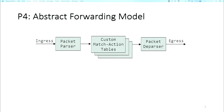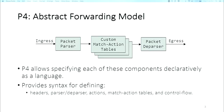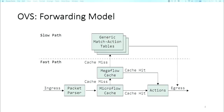I'll briefly talk about the P4 abstract forwarding model. In terms of OpenVSwitch or software switches, we don't have the queuing part in the middle — just a packet parser, a collection of match-action tables, and then a packet deparser. OpenVSwitch has a more complicated architecture with a fast path and a slow path. The fast path is where packet parsing happens, and instead of doing match-action pipelines, there is a set of caches. A cache gives you a single lookup cost versus doing a multi-lookup cost across a collection of match-action tables.